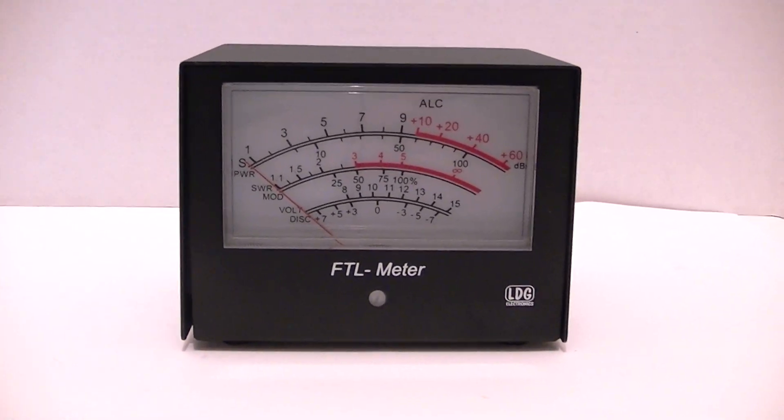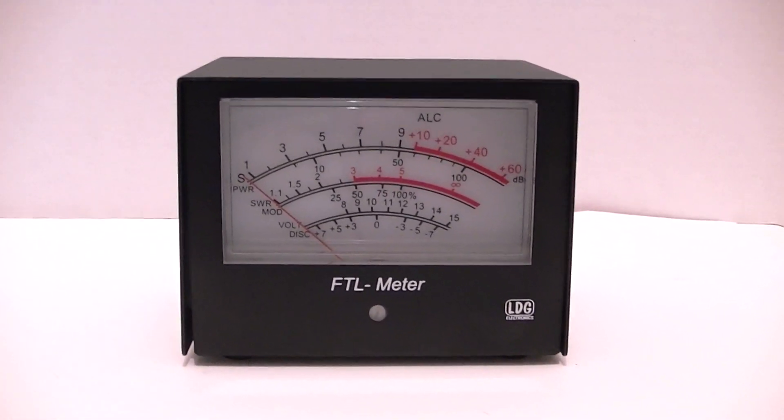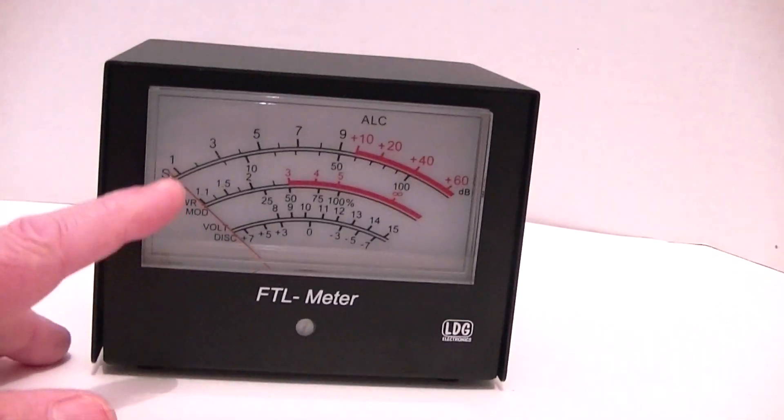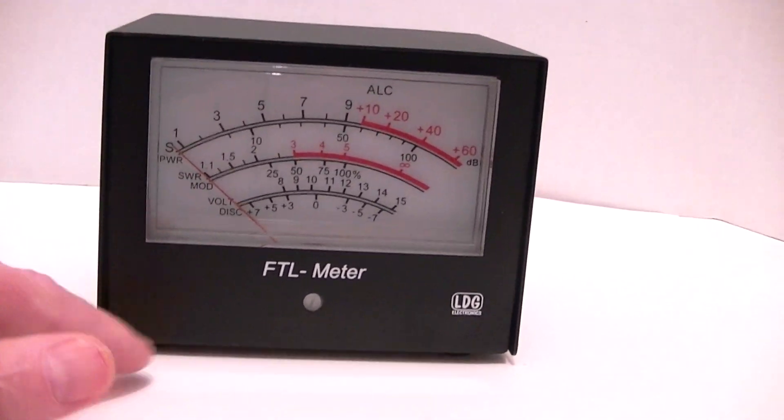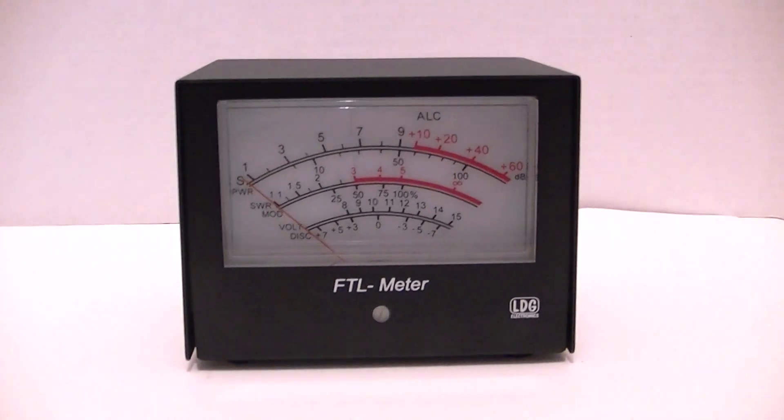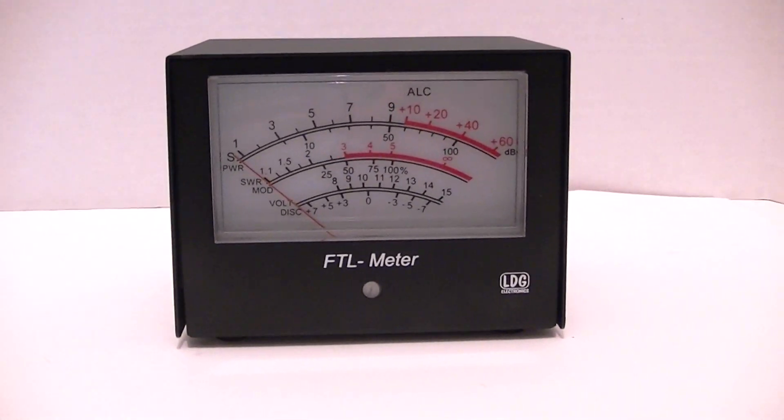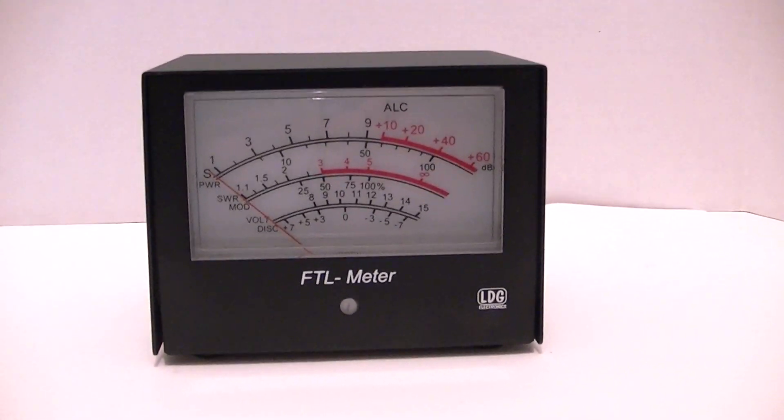They make two different versions. This is the four and a half inch version, the large meter, and they make a smaller one, two and a half inch. It comes in a big box with real nice packaging.